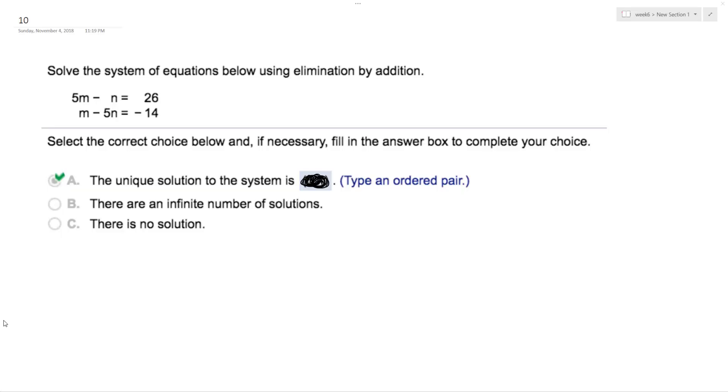We're going to solve this problem by elimination by addition. I'll multiply the top equation by negative 5 and add it to the bottom. So I end up with 5m minus n equals 26.